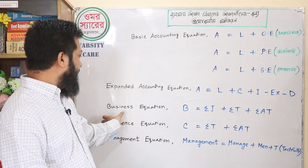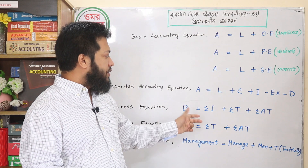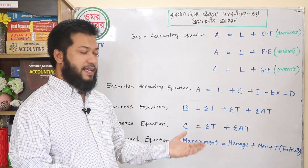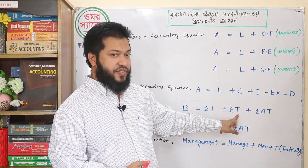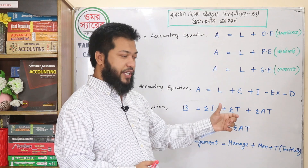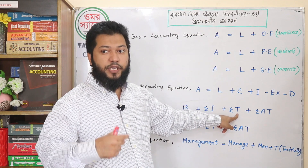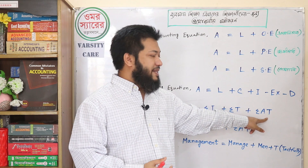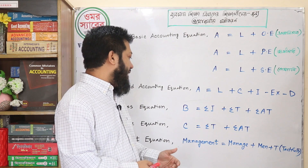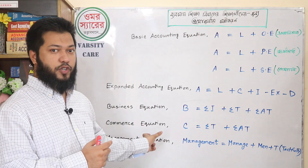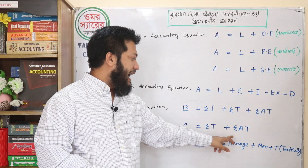Industry, T means trade, and A means auxiliary to trade. Industry means production, trade means exchange — buying and selling — and auxiliary to trade means supporting services to trade.